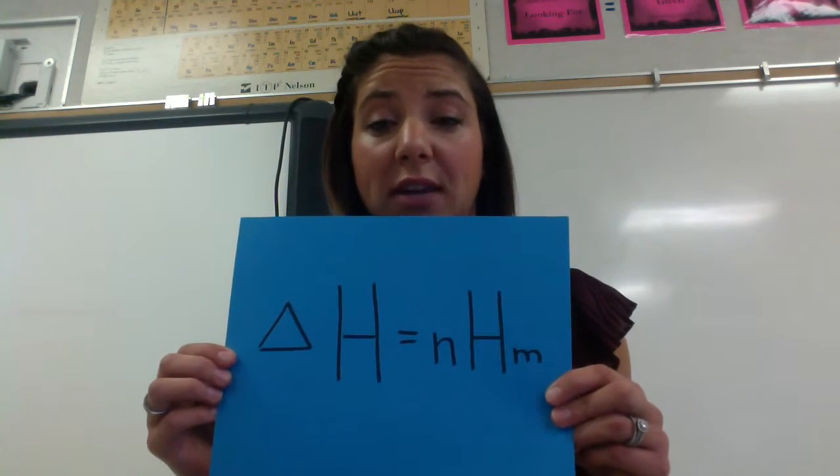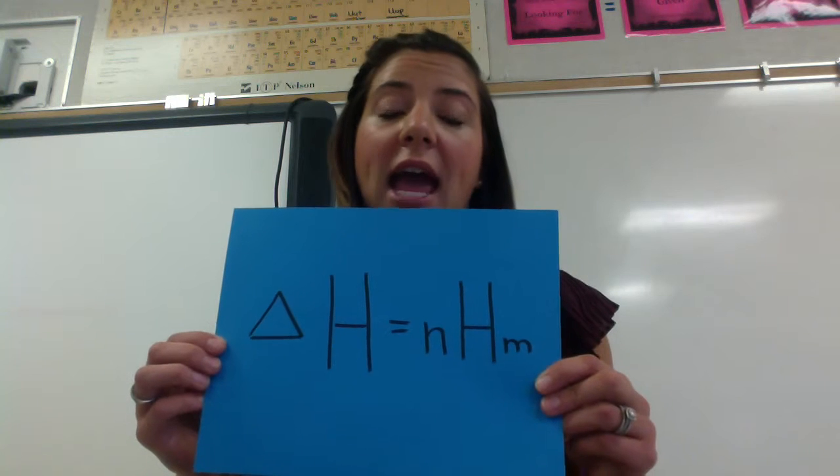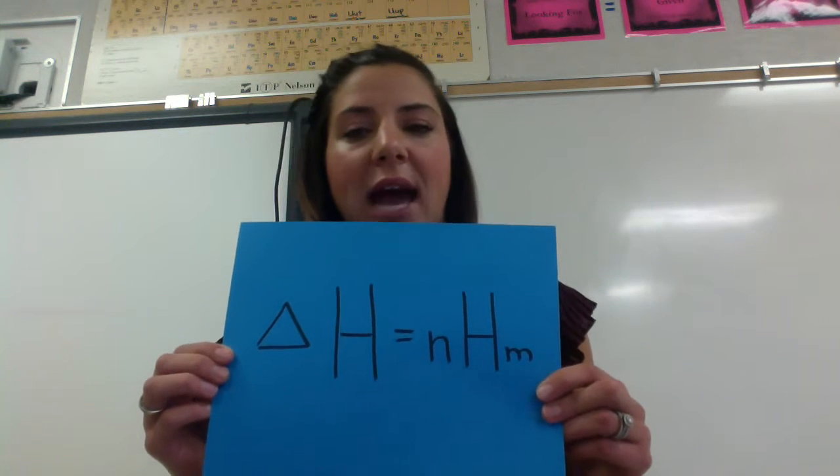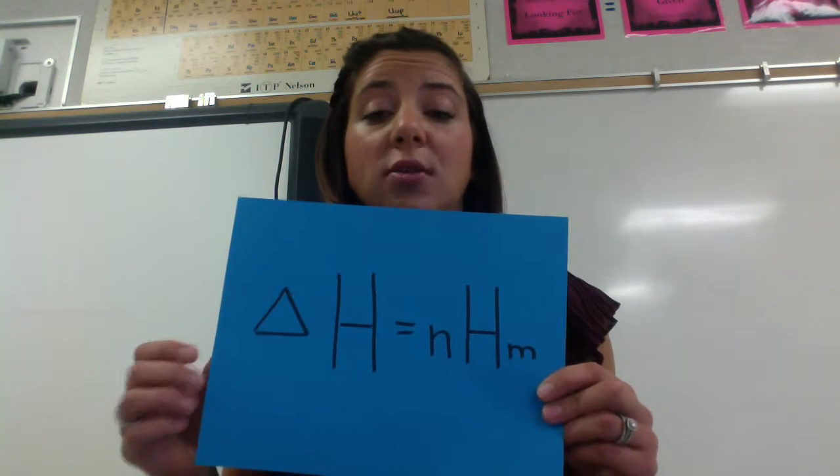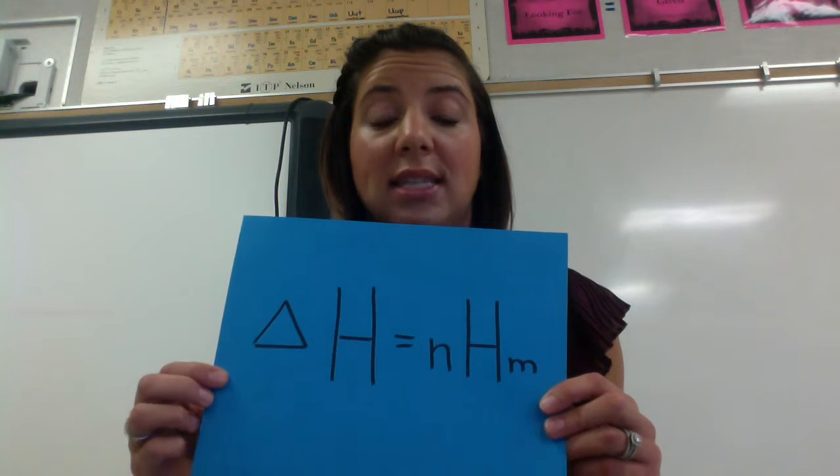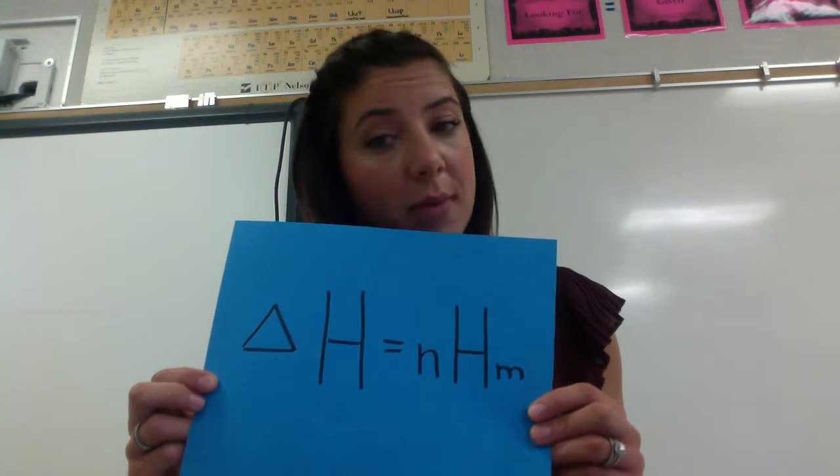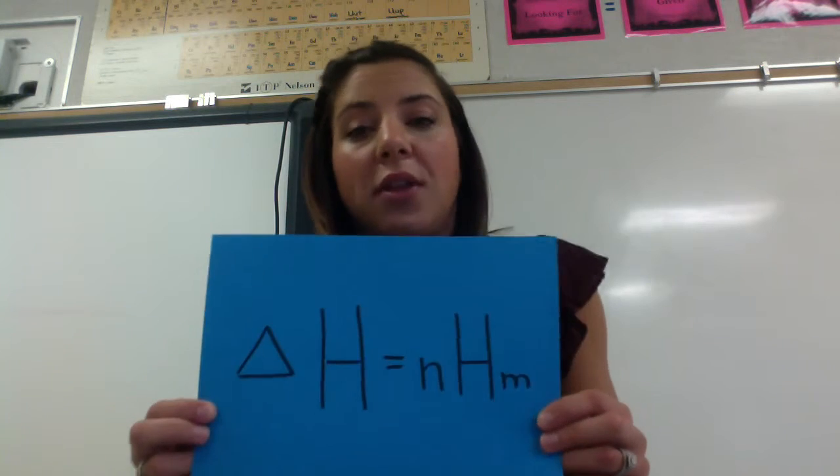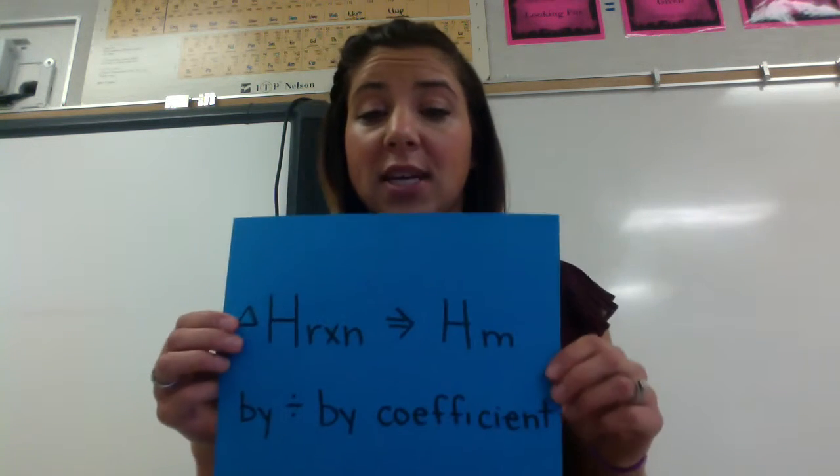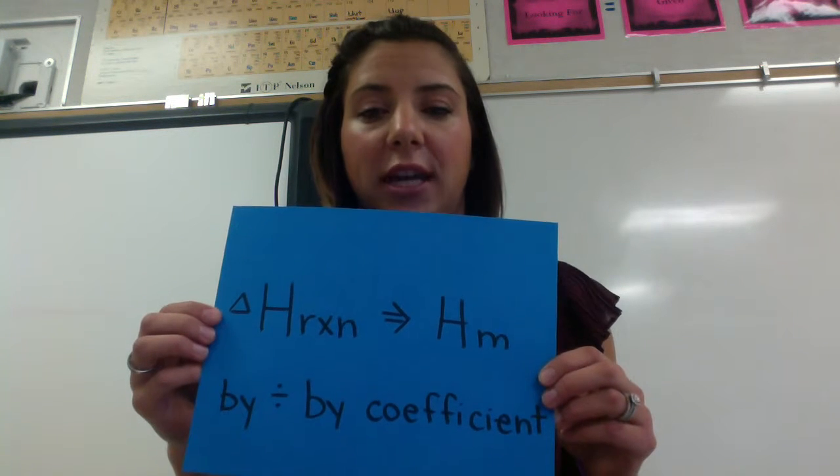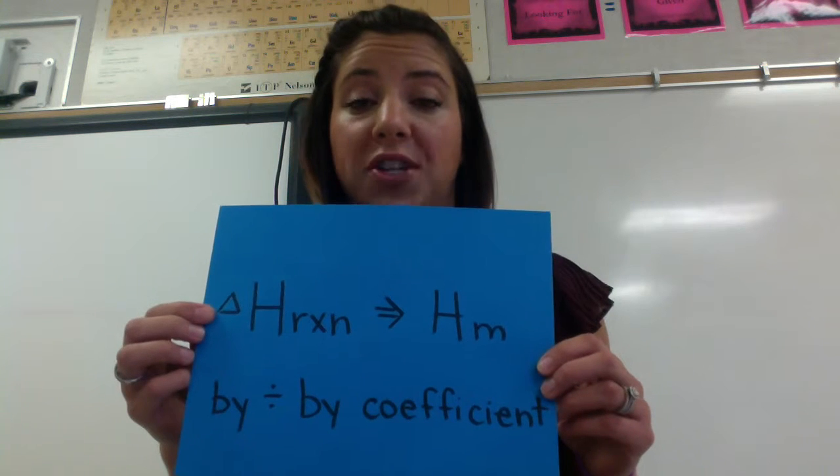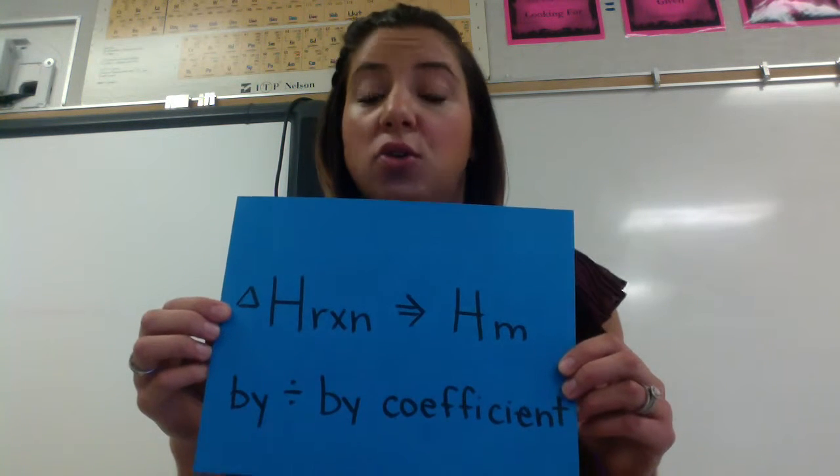If you're given a specific quantity of a product or a reactant and you need to determine the amount of energy released or absorbed by this chemical reaction determined by that amount, you need to use this formula. The amount of energy in kilojoules is equal to the number of moles or the chemical amount multiplied by the molar enthalpy. Now where the heck do we get this molar enthalpy number? What you're going to do is you're going to turn the reaction enthalpy that you've previously calculated into the molar enthalpy.